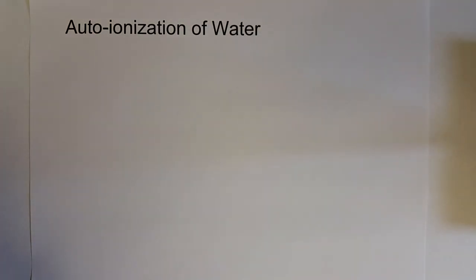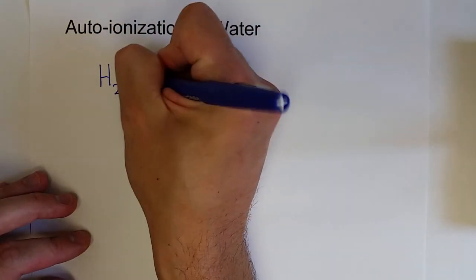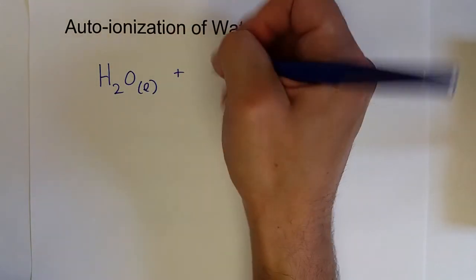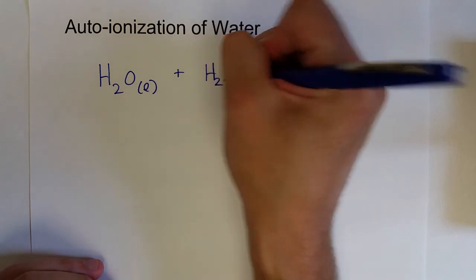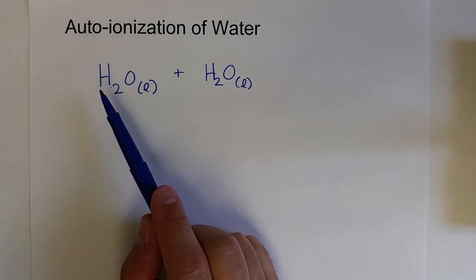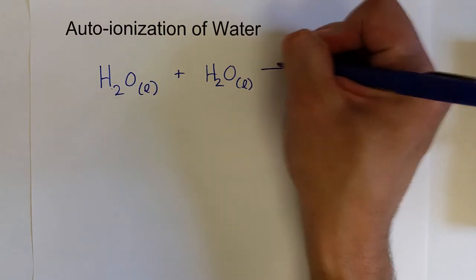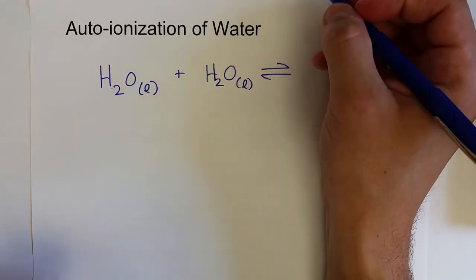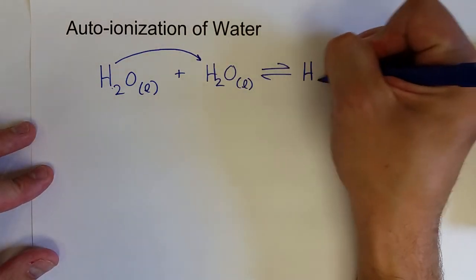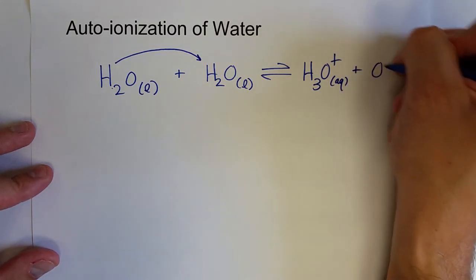Earlier we said that water was amphoteric, which means it can both accept protons and donate protons. It turns out that when you have a water sample, water will actually react with itself in a scenario where one water molecule donates a proton and the other accepts it. This process is known as the auto-ionization of water, where one water molecule donates a proton to the other to create the hydronium ion plus the hydroxide ion.